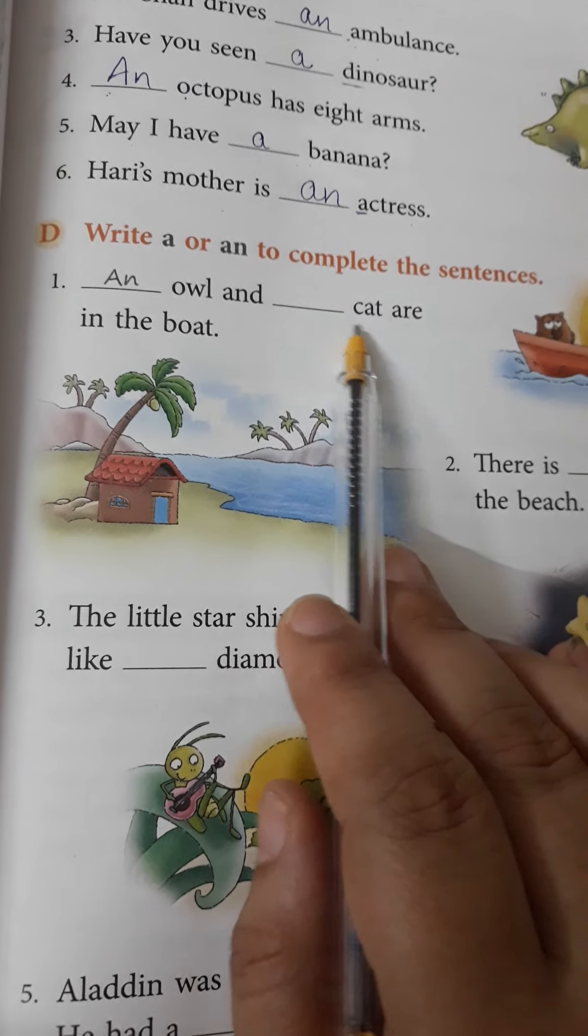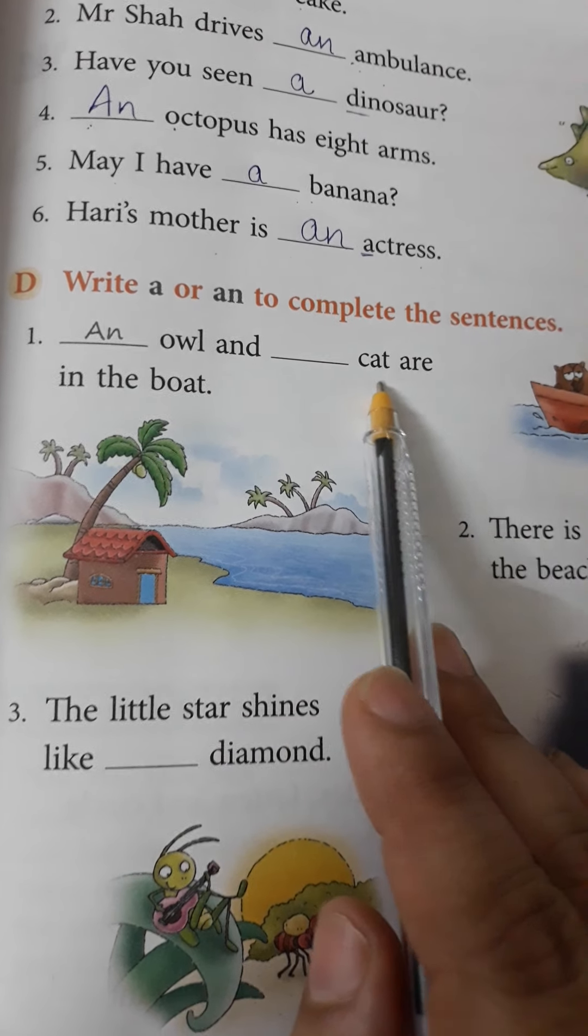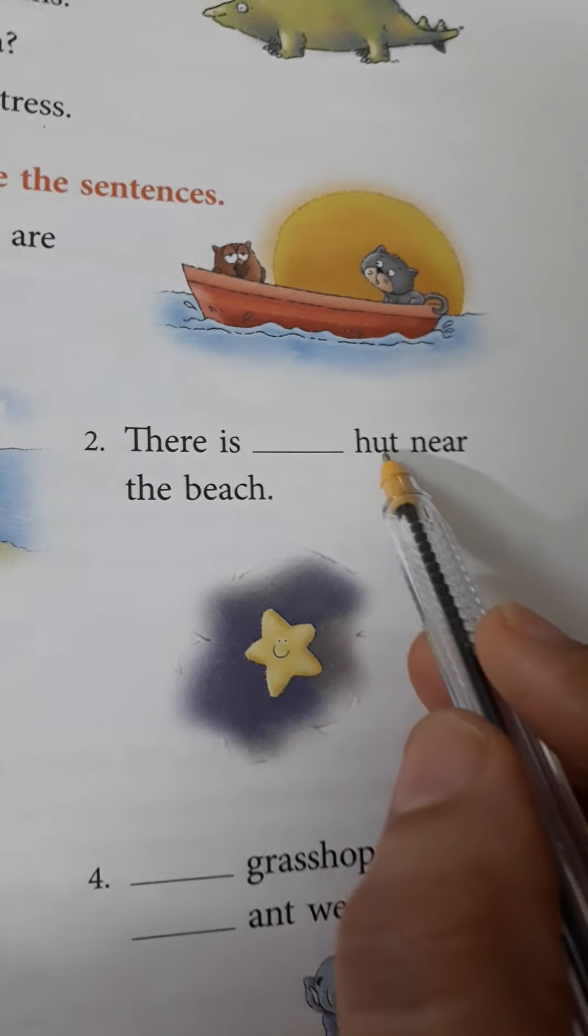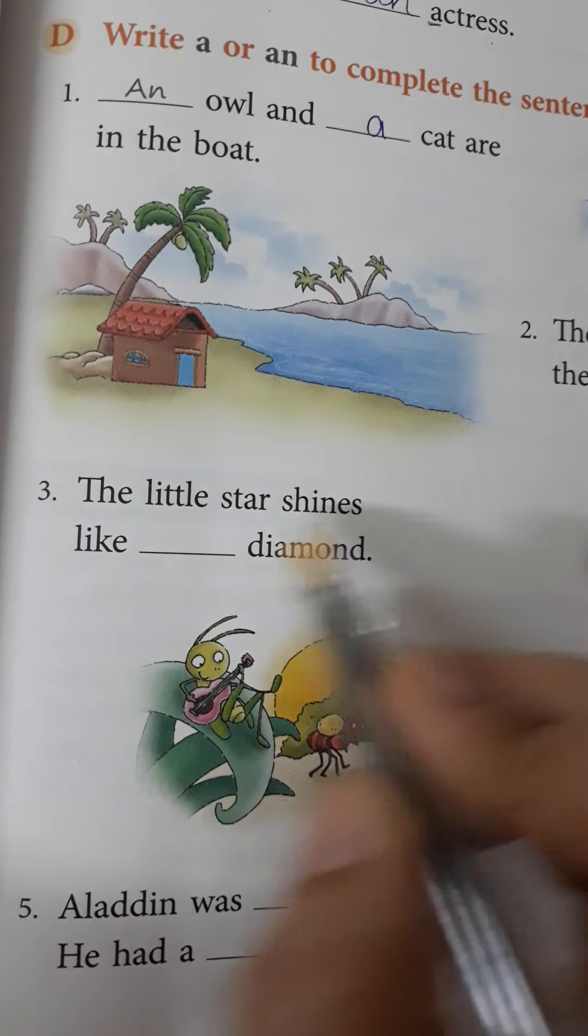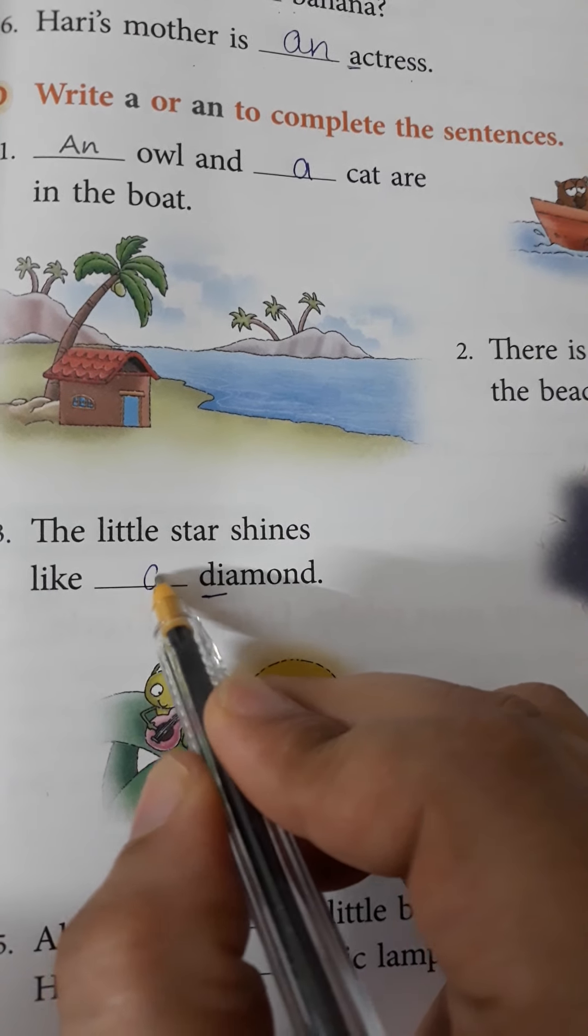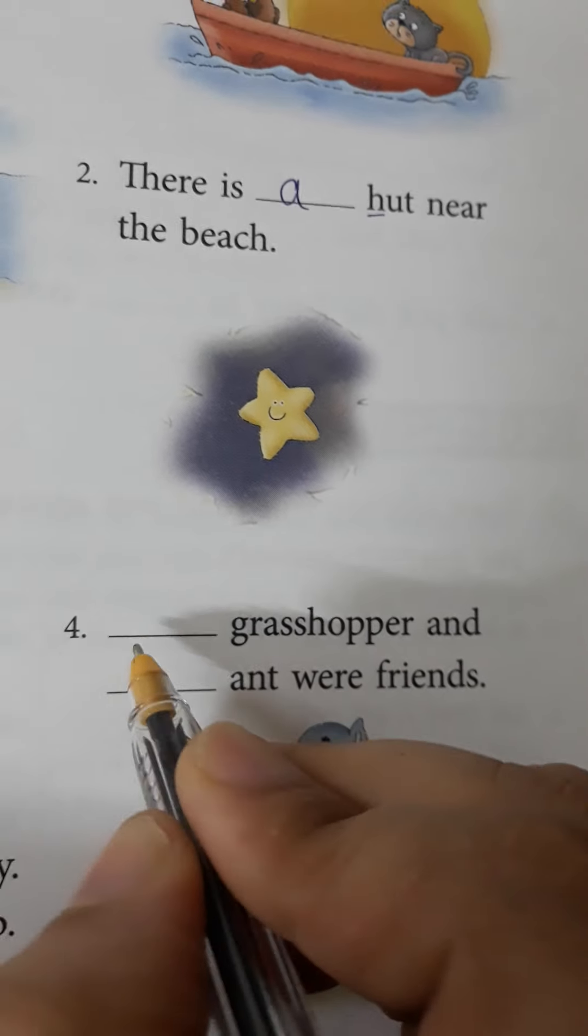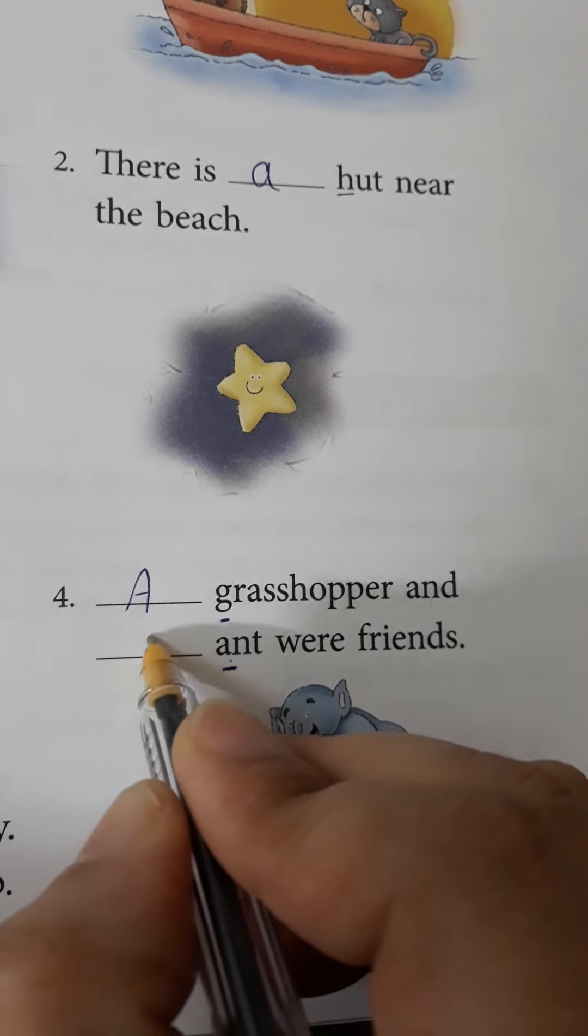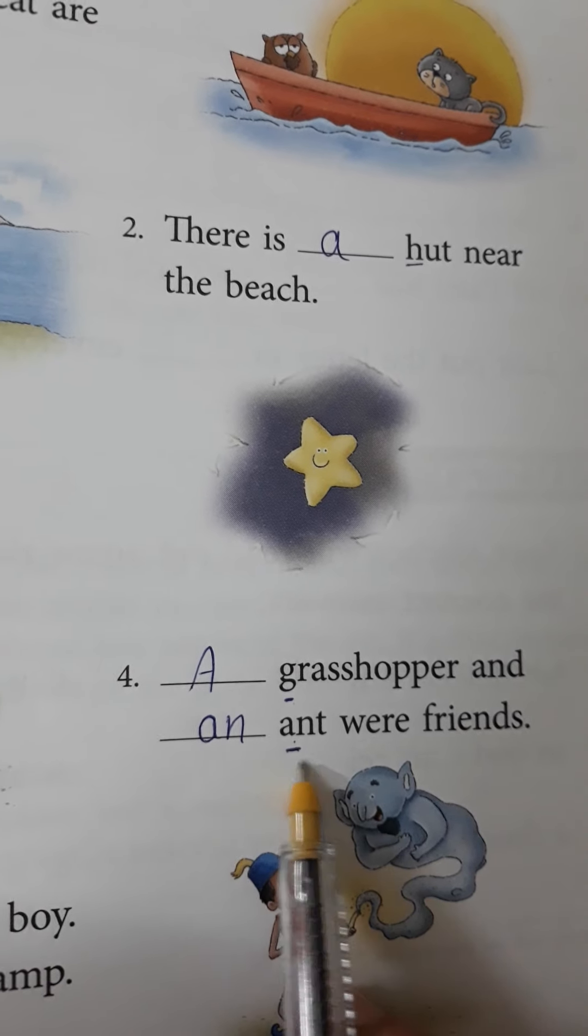Now, here again we have to write A and AN. AN owl and dash cat are in the boat. Cat starts with C. It's a consonant. So, A. There is dash hut. Now, hut starts with H. A. There is a hut near the beach. The little star shines like diamond. Again, consonants like a diamond. Dash grasshopper. A grasshopper because G is a consonant. Now, here ANT. It starts with A. A is a vowel. So, here we will write AN. A grasshopper and AN ANT were friends.